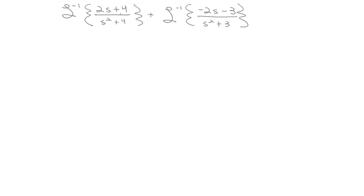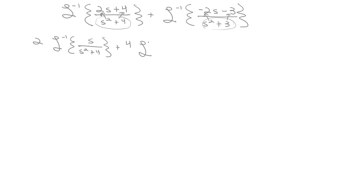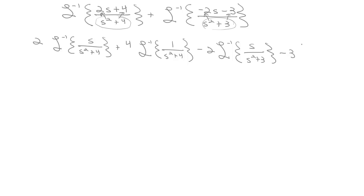Using the same strategy as before, dividing each fraction onto its terms and pulling out constants, we get: 2 times the inverse Laplace transform of s over s squared plus 4, plus 4 times the inverse Laplace transform of 1 over s squared plus 4, minus 2 times the inverse Laplace transform of s over s squared plus 3, minus 3 times the inverse Laplace transform of 1 over s squared plus 3.